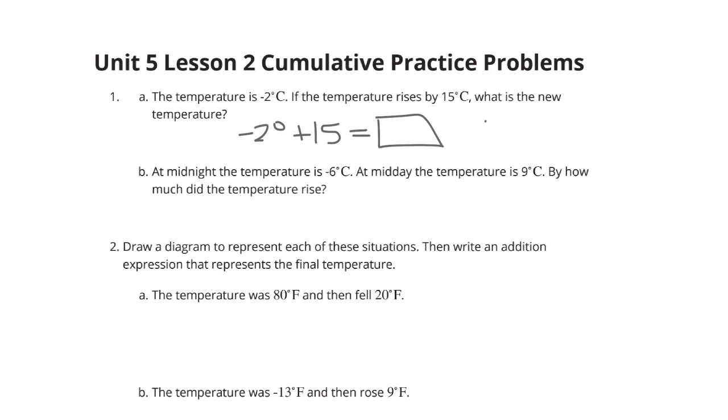Well, if you had a number line, you'd be at 0. You'd go back to -2. Now you're getting 15 bigger. Well, 2 bigger takes you to 0. That leaves another 13 left over, and so that's going to be 13 degrees here.